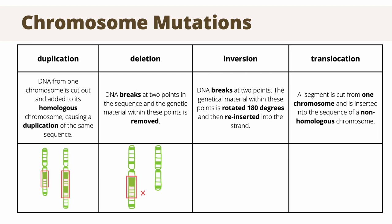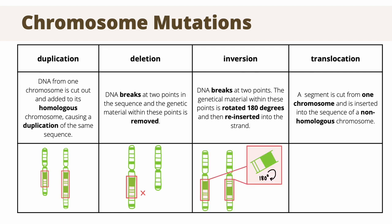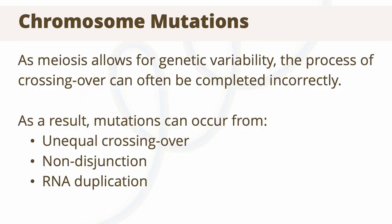Deletion mutations are where DNA is split at two points and this sequence of genetic material is lost, shortening the chromosome, which can have detrimental effects. Inversion mutations are where a segment of DNA is split at two points, then rotated 180 degrees and reinserted back into its original location on the same chromosome. Translocation mutations are where segments of DNA are removed from one chromosome and inserted at a location on a non-homologous chromosome. These chromosome mutations can occur due to errors during meiosis, caused by unequal crossing over, non-disjunction of chromosomes where chromosomes do not correctly separate, as well as incorrect duplication of RNA.